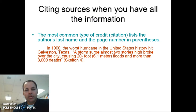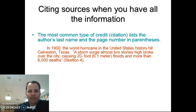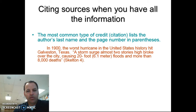Let's take a look at this example. In 1900, the worst hurricane in United States history hit Galveston, Texas. Quote: 'a storm surge almost two stories high broke over the city, causing 20-foot floods, more than 8,000 deaths.' There's the citation at the end.